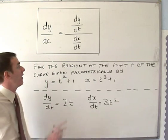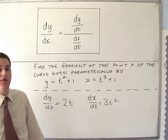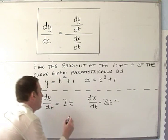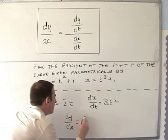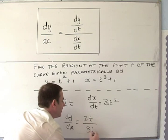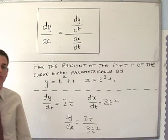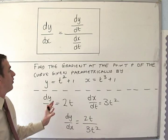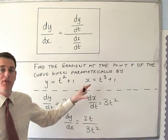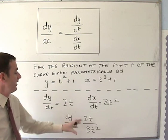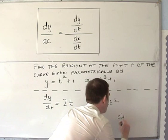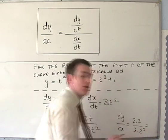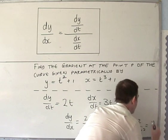From our formula we can work out that dy/dx of this curve at any point is going to be dy/dt over dx/dt. So dy/dt is 2t and dx/dt is 3t squared. The question asks us to find this at point t=2, so we stick in t=2 and we end up with dy/dx equal to 2 times 2 over 3 times 2 squared, which is equal to one third.